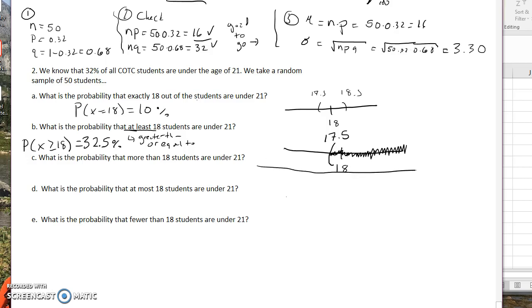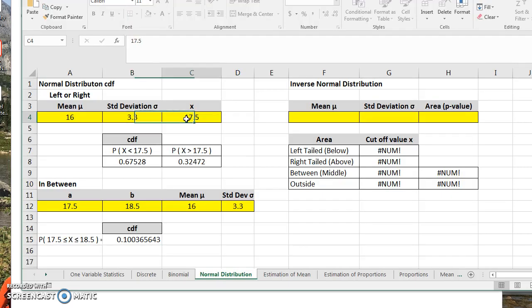All right, what is the probability that more than 18 students are under the age of 21? More than would be greater than, but I'm not going to include 18, so we're going to be just above it. So with the continuity correction, we're going to actually be doing 18.5. So the probability that X is greater than 18, to make sure that we do not include 18, we're going to change that to 18.5. And that probability drops to 22.4%.